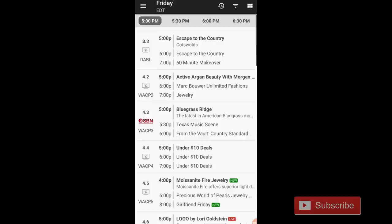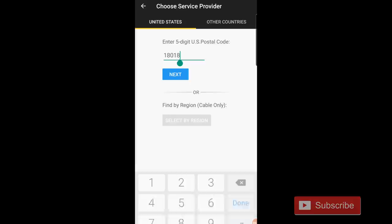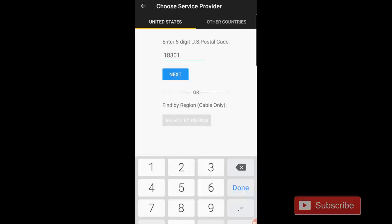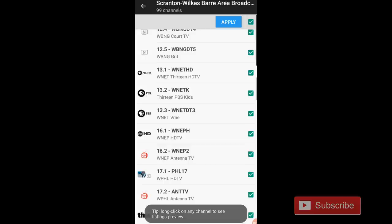Now, for some reason, there are channels that you receive that are not within this market, so in my situation, I actually get Scranton-Wilkes-Barre stations and pretty much no Philadelphia stations. If you tap on the upper left corner and hit change lineup, type in a zip code that's kind of closer to the market that you get stations from. So in my situation, I'm going to type in the zip code of East Stroudsburg, which is between Philadelphia and Scranton-Wilkes-Barre.